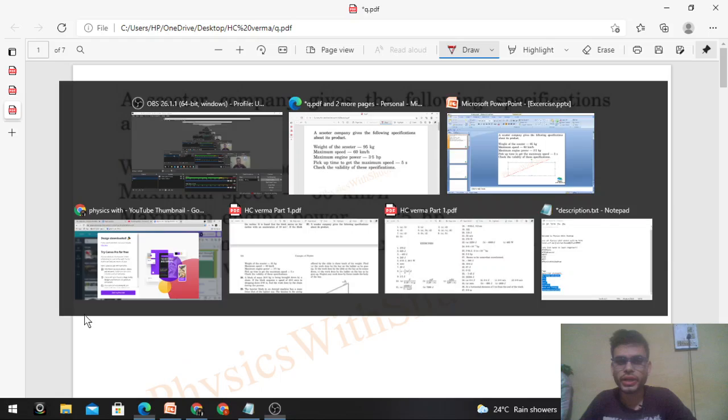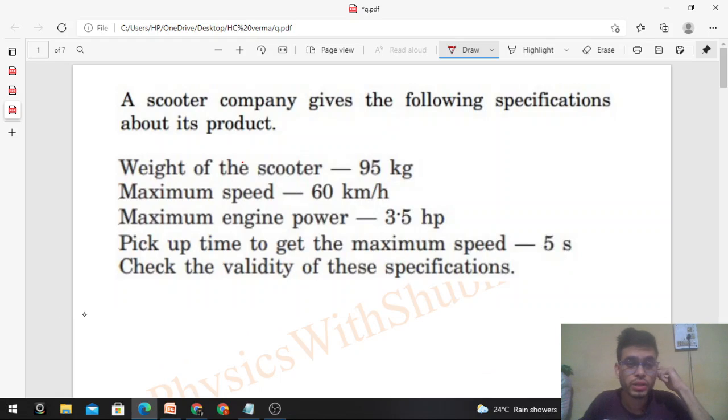Okay, hi everyone. So today let's discuss this interesting problem. It says a scooter company gives the following specifications about its product. So weight of the scooter is given as 95 kilogram. Maximum speed is given 60 kilometer per hour.